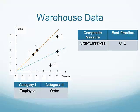In this particular example, there is only one measure in Category 1 and one measure in Category 2. Therefore, there is no need to build the Excel model to determine the weights and decide which warehouses are efficient.